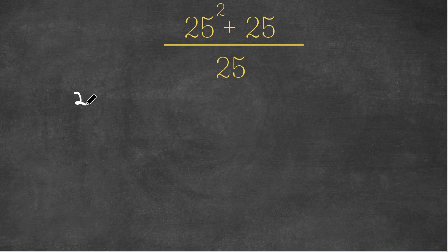So this would give me 25 times, 25 squared divided by 25 is simply 25, plus 25 divided by 25 is 1, and still dividing this by 25.